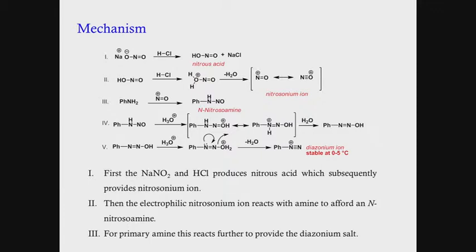So what is happening here is that sodium nitrite and hydrochloric acid first produce nitrous acid, which produces the nitrosinium ion. Once formed, this is stable at 0 to 5 degrees and can be used for further reactions.